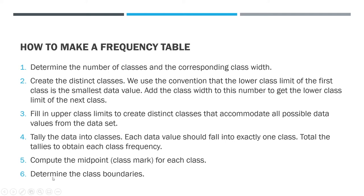Then we do the tallying into the classes. Each data value should fall into exactly one class — it should be exclusively belonging to a specific class and not belong to more than one. The total tally gives each class frequency. We then compute the midpoint or class mark for each class, and determine the class boundaries.